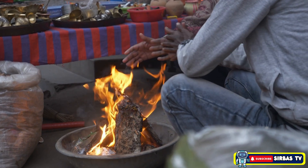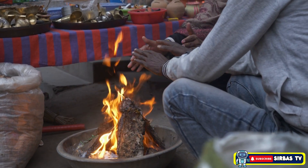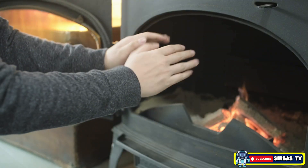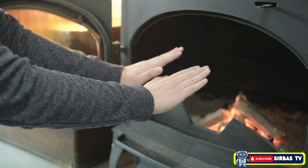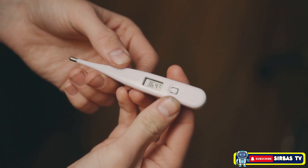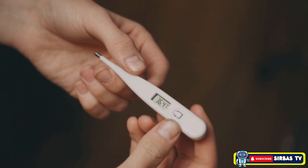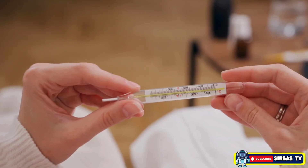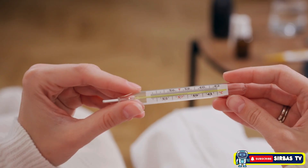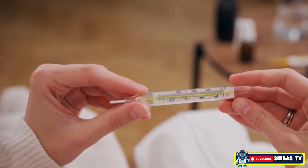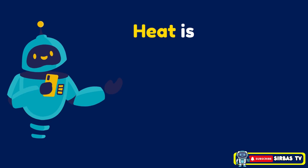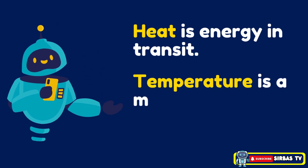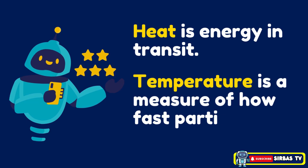Before we dive into definitions, let us start with what you already know. When you warm your hands near a fire, you feel energy moving toward you. When you check your body temperature with a thermometer, you see a number. That feeling of warmth and that number are not the same thing. In science, we classify them differently. Heat is energy in transit. Temperature is a measure of how fast particles are moving.